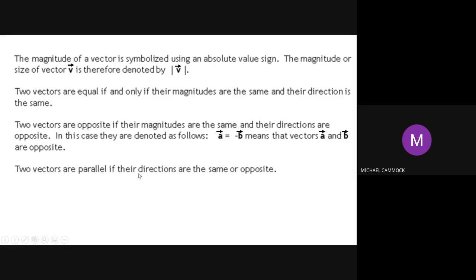Two vectors are equal if and only if their magnitudes and directions are both the same. Two vectors are opposite if their magnitudes are the same but their directions are opposite — you can represent that by putting a minus sign in front of the vector, so vector A equals negative B. Two vectors are parallel if their directions are the same or opposite, so parallel vectors can be equal or opposite to each other.